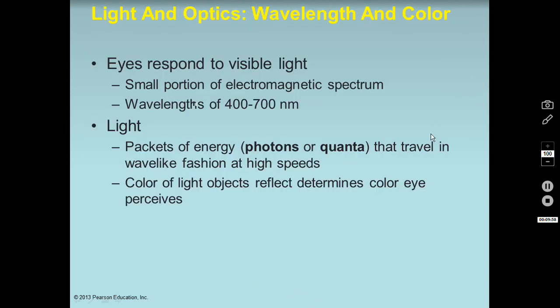Since we're talking about light, we need to talk a little physics. Our eyes only respond to visible light — a very small portion of the electromagnetic spectrum. The electromagnetic spectrum includes everything from infrared and UV all the way up to gamma radiation, and our eyes only respond to a very narrow range of about 400 to 700 nanometers in wavelength.